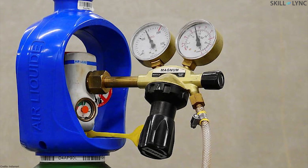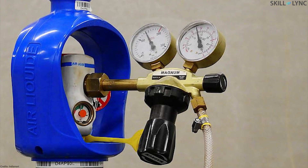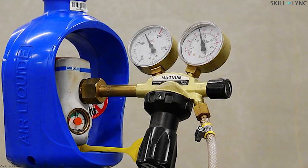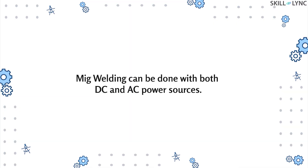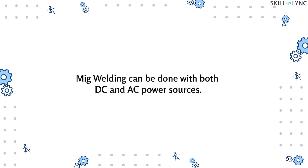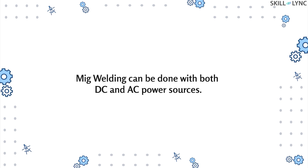The inert gas for this welding procedure is stored in cylindrical containers at high pressure, and their flow is generally controlled by regulator valves. Similar to most other types of arc welding, MIG welding can be done with either a DC power source or an AC power source.